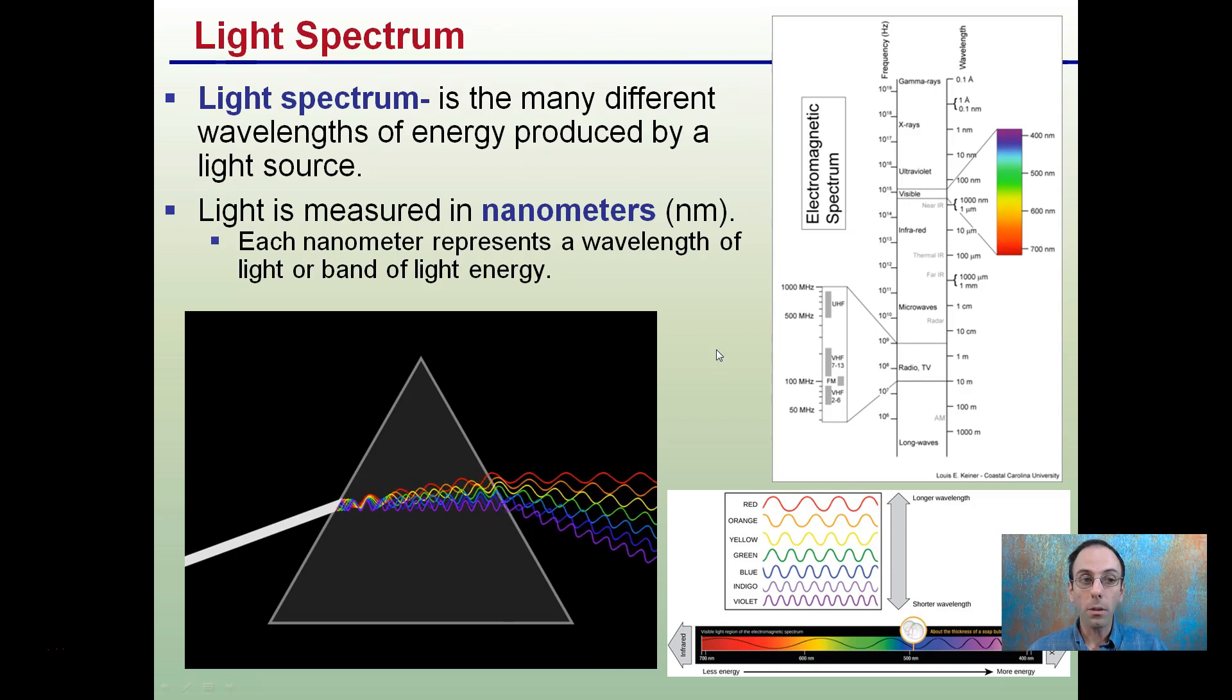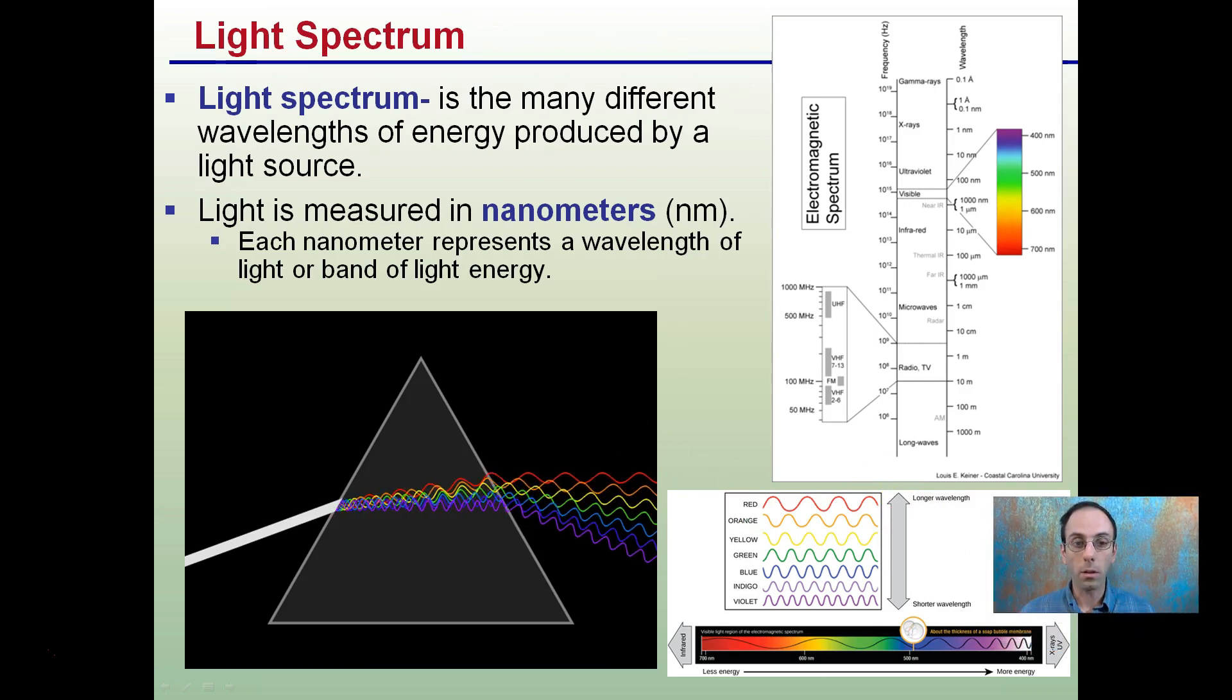In the light spectrum, it's many different wavelengths of energy produced by a light source. Now, light is measured in nanometers, and you can think of that as really small meters. Each nanometer represents a wavelength of light or band of energy. What this image or prism tries to show here, we have white light coming in, and we have the different colors being separated out.